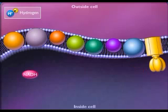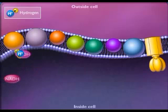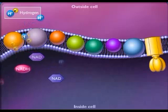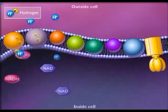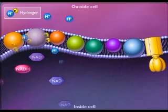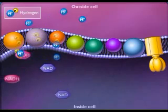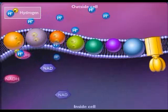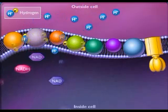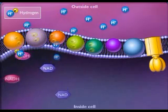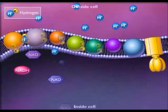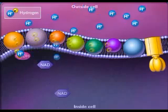Electrons enter the electron transport chain when NADH transfers its protons plus electrons to a membrane-embedded carrier protein. The electrons are sequentially carried along the electron transport chain while the protons are shuttled to the outside of the membrane.